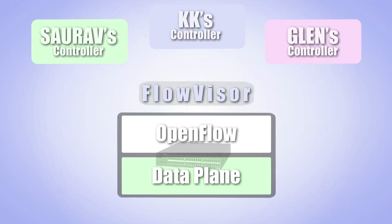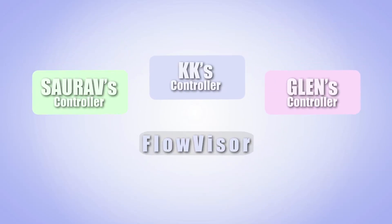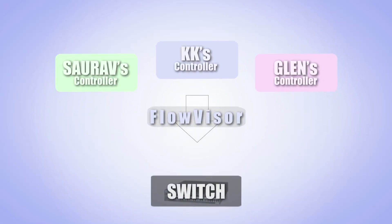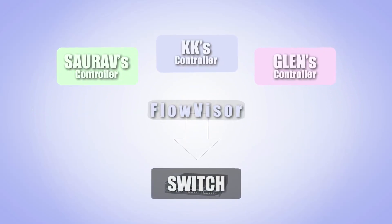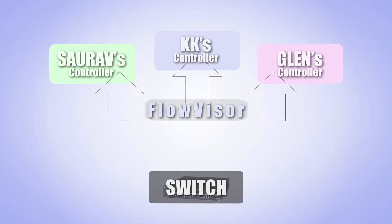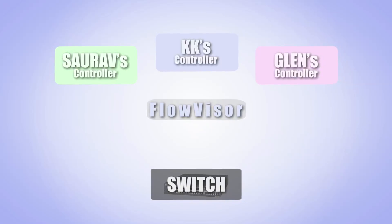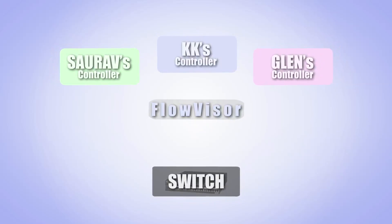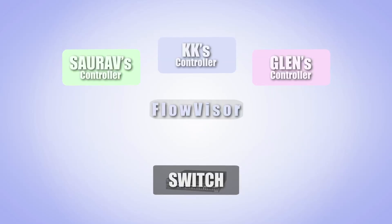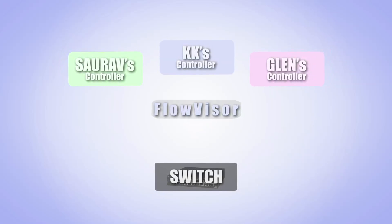FlowVisor works as a transparent layer between switches and multiple controllers. That is, it speaks the OpenFlow protocol both down to the switches and also up to the controllers. In this way, much like a hypervisor acts in standard machine virtualization, FlowVisor intercepts all control messages to and from the data path and then sanity checks and rewrites them to ensure isolation.